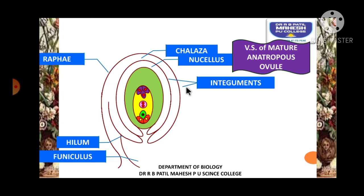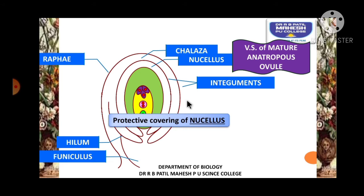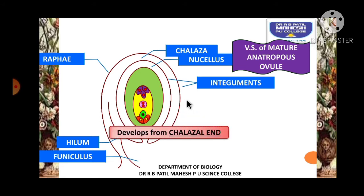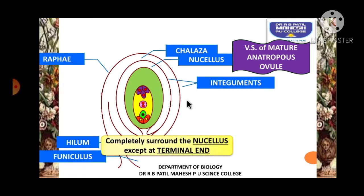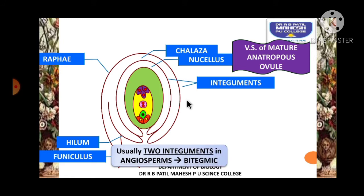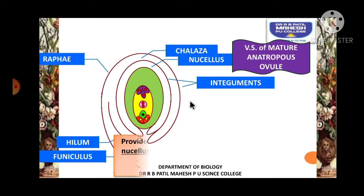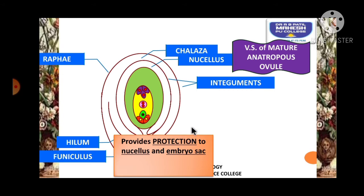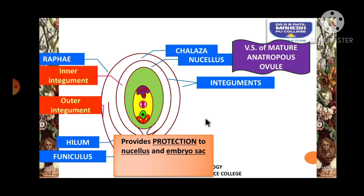There are two types of integuments present which cover the embryo sac. Integuments are protective coverings of the nucellus and embryo sac; they develop from the chalazal end and completely surround the ovule, leaving one terminal end which becomes the micropyle. Usually 90% of angiosperms have two integuments — such an ovule is called bitegmic. If there is only one integument, it is called unitegmic. If there are no integuments, it is called ategmic. These integuments provide protection to the nucellus and embryo sac.